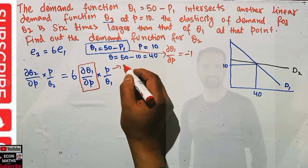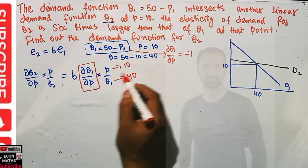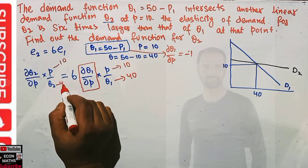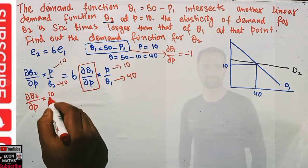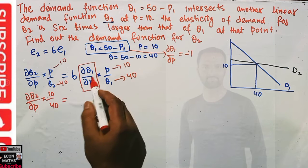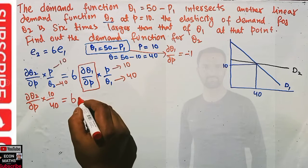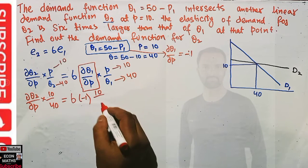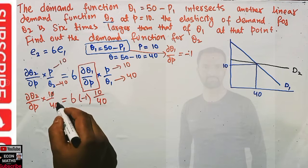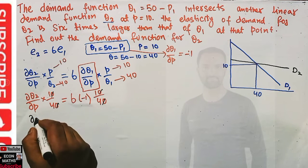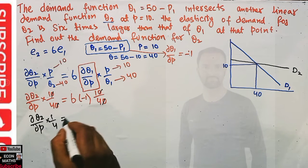At the intersection point, p is 10 and q is 40. Substituting into the elasticity equation: dq2/dp times 10/40 equals 6 times (dq1/dp) times 10/40. In place of dq1/dp we write minus 1. So we have dq2/dp times 10/40 = 6 times minus 1 times 10/40. Simplifying, dq2/dp times 1/4 equals 6 times minus 1/4.